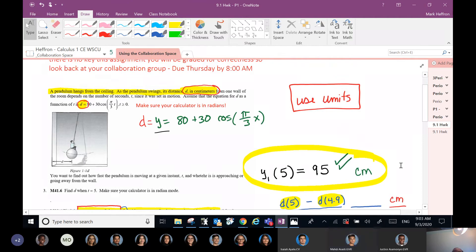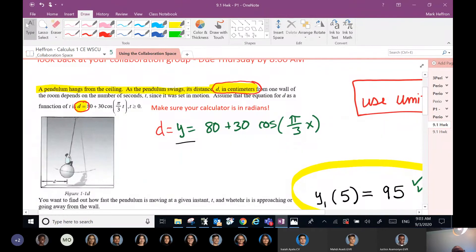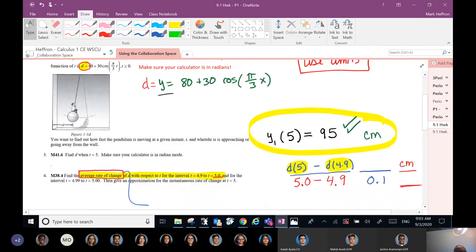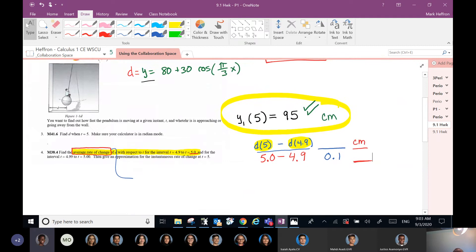It's okay. Let's go back and look at the problem statement. Let's everybody read it again. A pendulum hangs from the ceiling. As the pendulum swings, its distance d in centimeters from one wall of the room depends on the number of seconds, t, since it was set in motion. Assume that the equation for d as a function of t is dot, dot, dot. Now, what does everybody think that 5.0 and 4.9 represent? Is it seconds? Yeah, it's seconds. Very good.